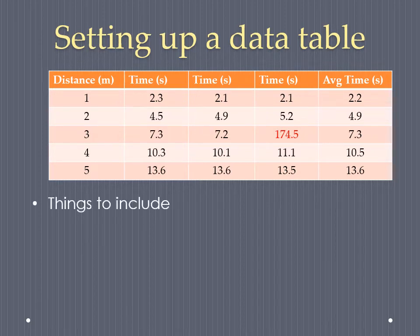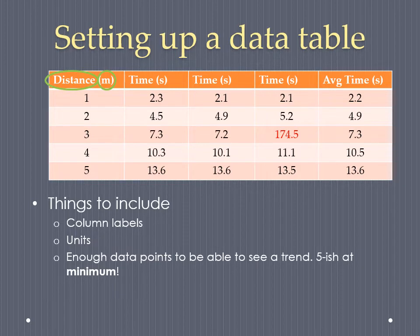Things to include in your data table: First, column labels, so make sure that you label every column across your data table so we know what it is. Second, the units, so we know whether your distance measures are in centimeters or meters, and the same would be for the other columns. The third is that your data table should have enough data points to be able to see a trend. Usually we'd expect at least five data points. So if we're trying to find a relationship between distance and time, we want to do at least five different distances so that we can see what happens to the time as that distance changes.